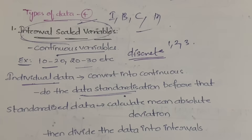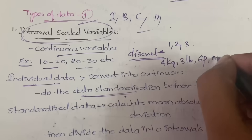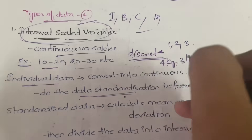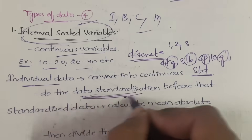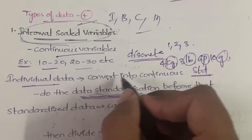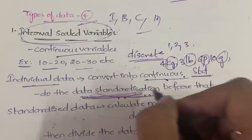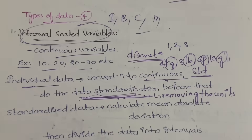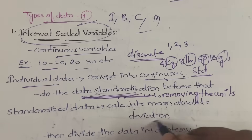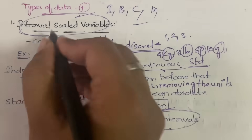Data standardization means removing the units from variables to make them unitless. For example, if you have data like 4 kg, 3 lb, 6 pounds, 10 grams — different units — you remove the units to produce standardized data. Then, for this standardized data, you calculate the mean absolute deviation, and based on this deviation you divide the data into a number of intervals.